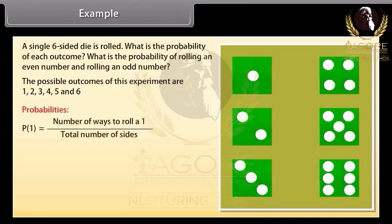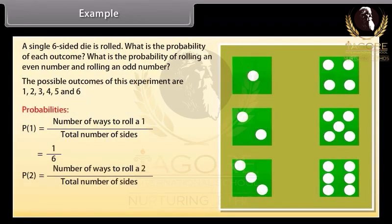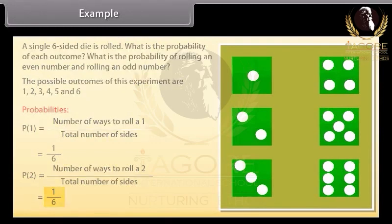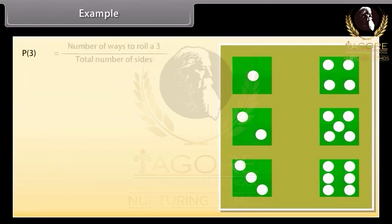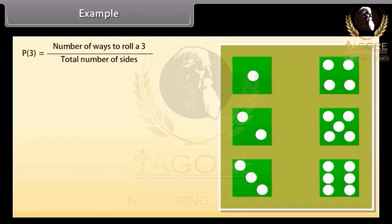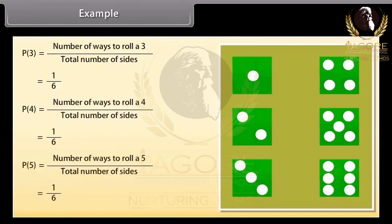Probability of 1 is number of ways to roll a 1 by total number of sides, equals 1 by 6. Probability of 2 is number of ways to roll a 2 by total number of sides, equals 1 by 6. Similarly, the probability of 3 is number of ways to roll a 1 by total number of sides, equals 1 by 6. In the same way, we will find the probabilities of 4, 5 and 6.